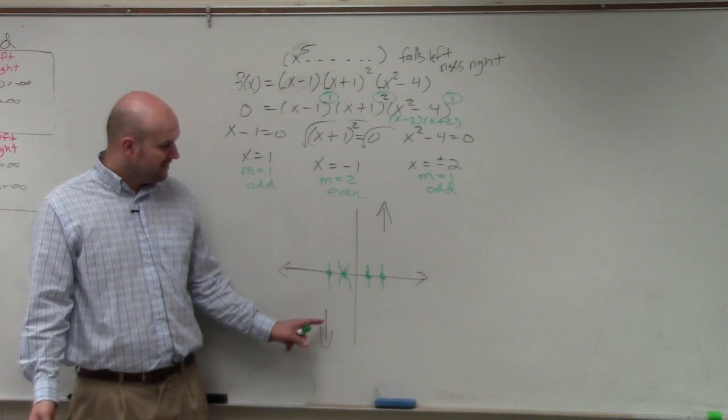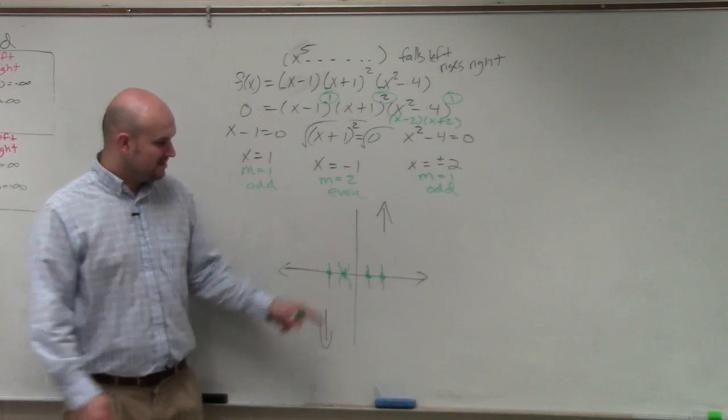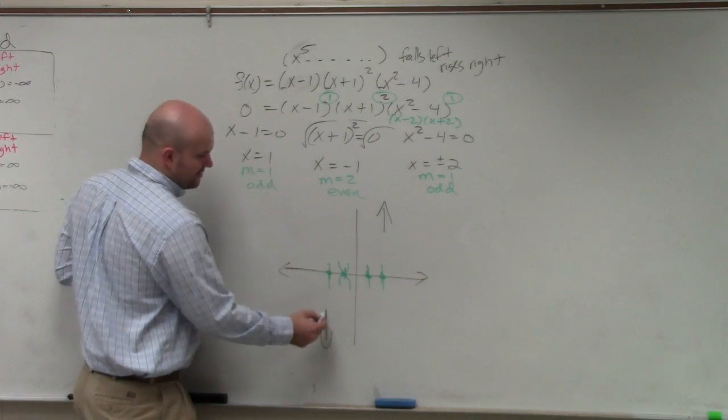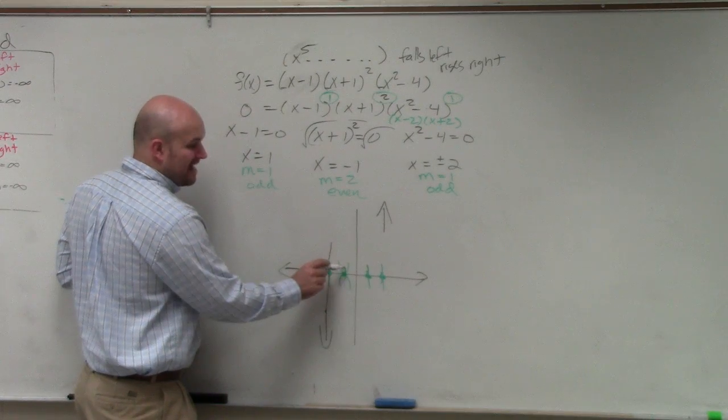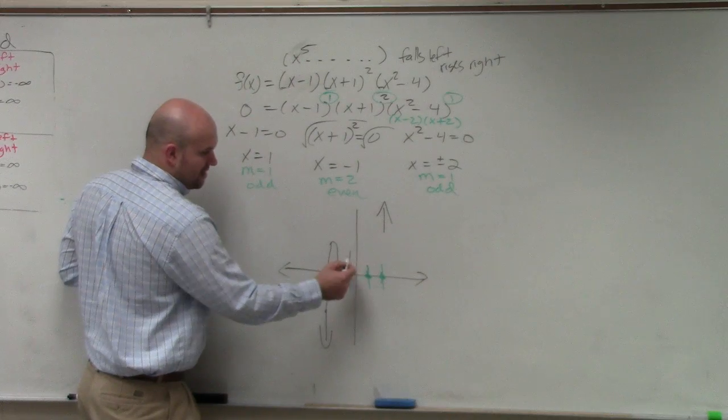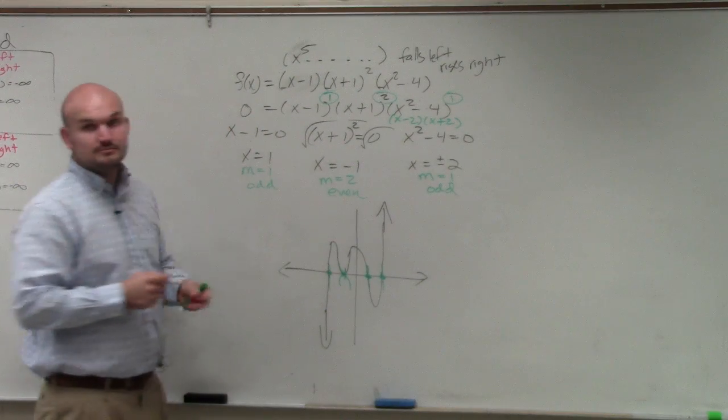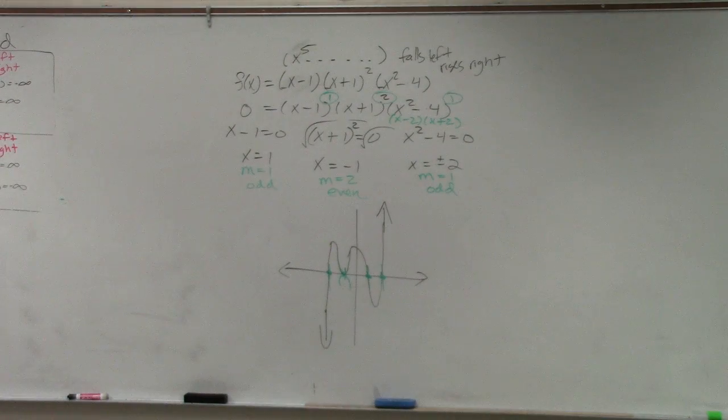Now watch. All I'm going to do is connect my two end behavior arrows through the zeros, and then follow the pattern. So it has to go through here, so I go through here. It has to bounce here, so bounce, cross, cross. Now the graph looks something like that. And if you guys don't believe me, I will plug it into Desmos.